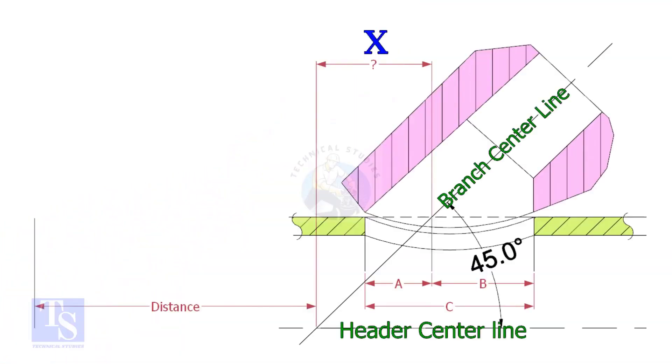Most commonly, laterolettes are used for 45 degree branch connections. In a drawing, the distance to the center of a laterolette is given from a certain point.